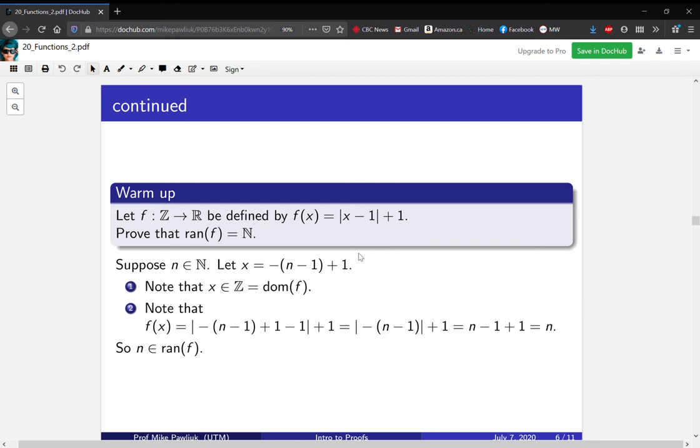As you might expect, for most n, you'll actually get two x's that work. Since we're trying to show that it's in the range, it's enough to just find one thing that works, one x that works. Because being in the range means there is an x that outputs you. It doesn't matter how many there are.